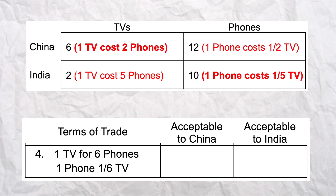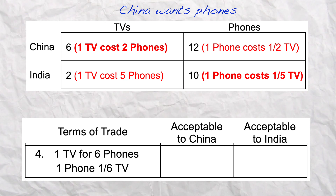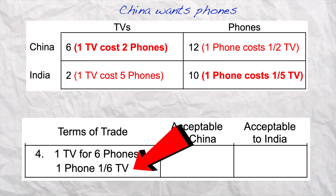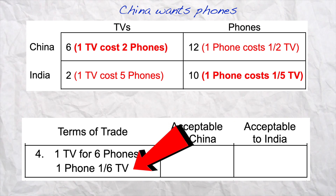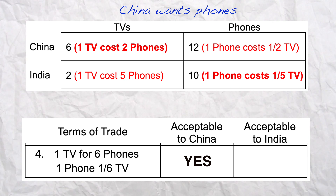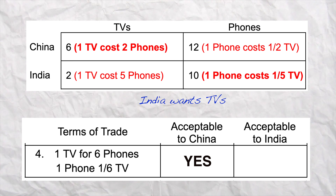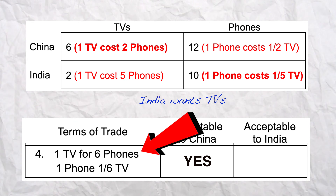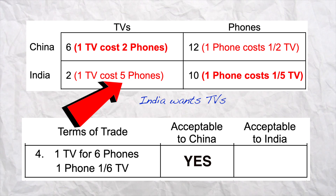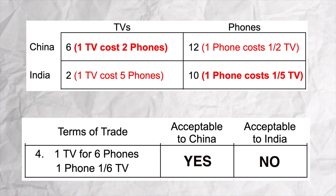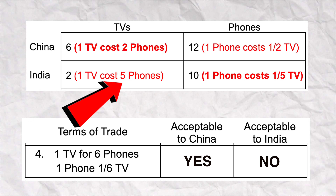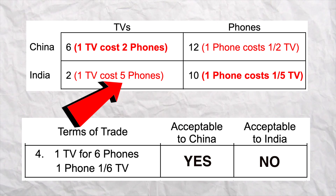Last one, number four, same thing. China wants phones; if they make them themselves it's gonna cost one-half a TV, or they can trade and it's only gonna cost one-sixth of a TV — this is a good deal for China. On the other side, India wants TVs; if they trade it's gonna cost six phones to get one TV, but it makes more sense to give up only five phones and produce it themselves. So this is not a good trade for India — they can produce it at a lower opportunity cost themselves.